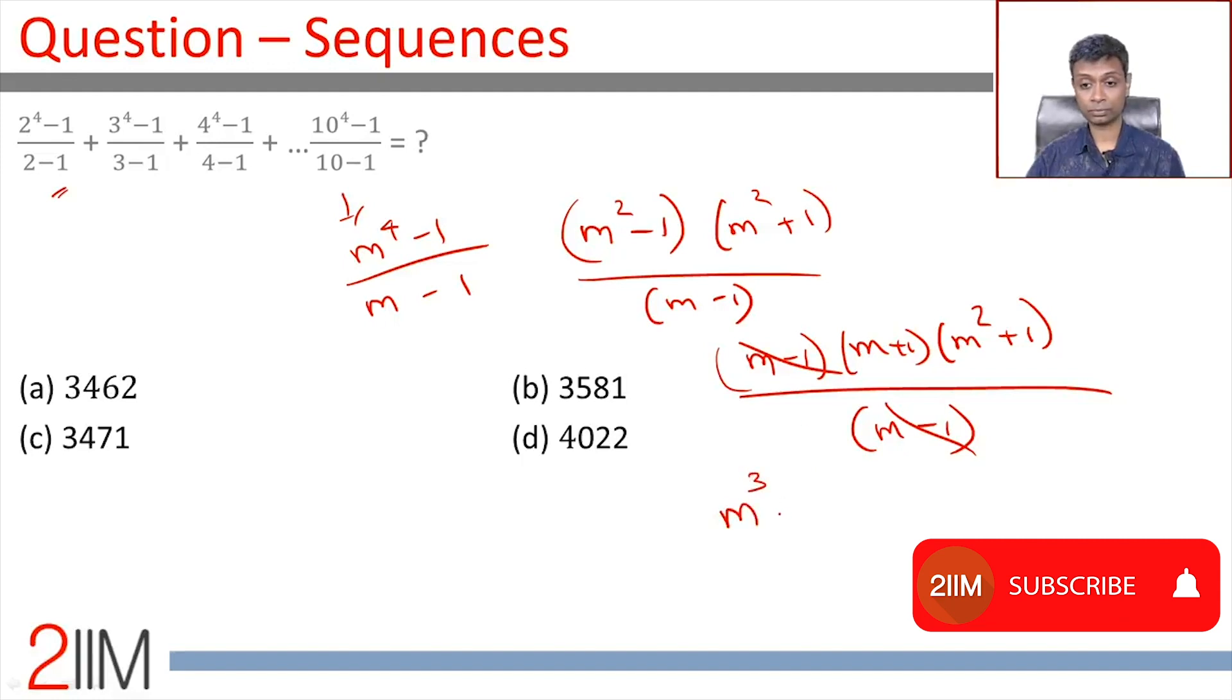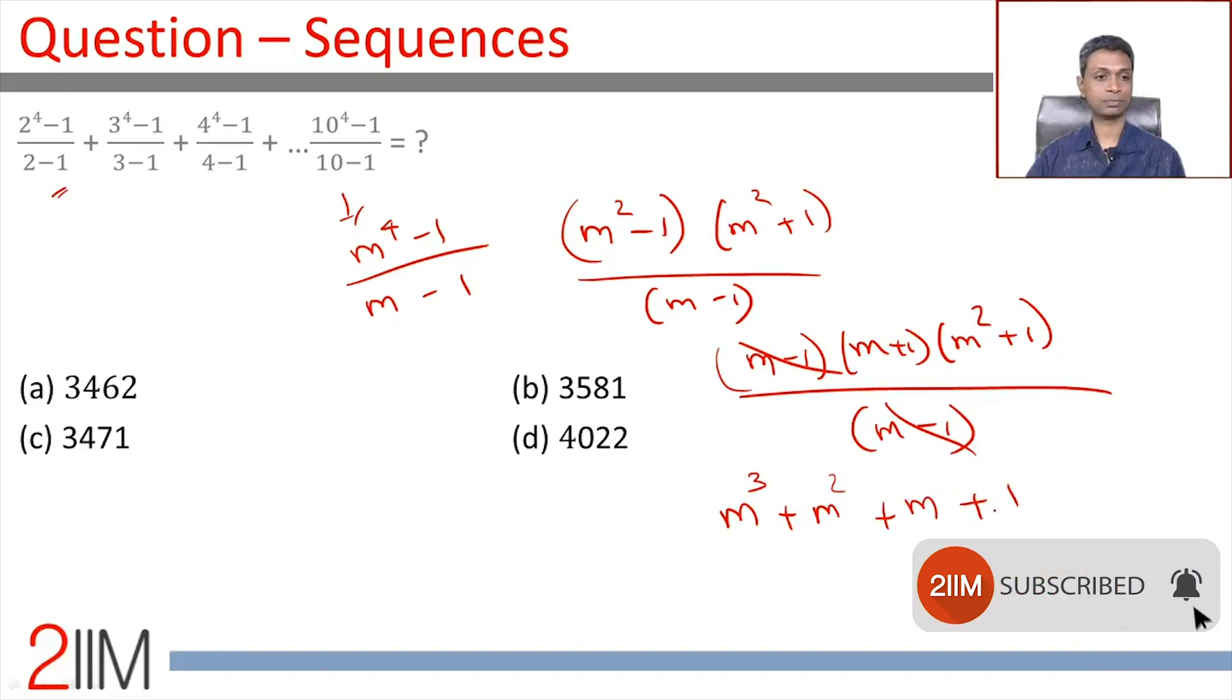This simplifies to m^3 + m^2 + m + 1. So 2^4-1/(2-1) is 2^3 + 2^2 + 2 + 1. 3^4-1/(3-1) is 3^3 + 3^2 + 3 + 1, and so on.